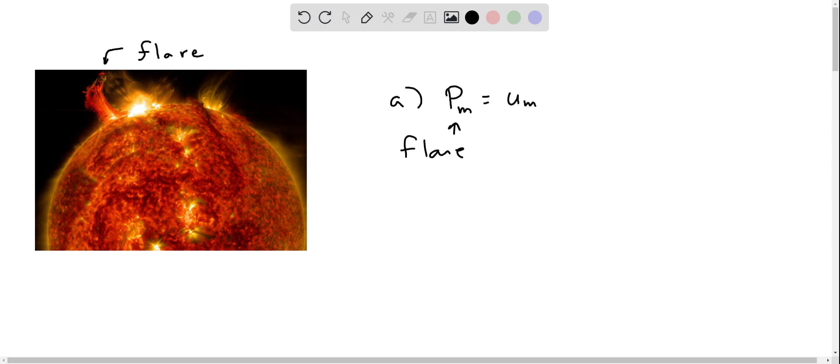So magnetic pressure is actually the same as the energy density held inside of the magnetic field. By using the Zeeman effect, we can measure the magnetic field in the region of these flares. And the energy density is B squared over 2 mu naught.